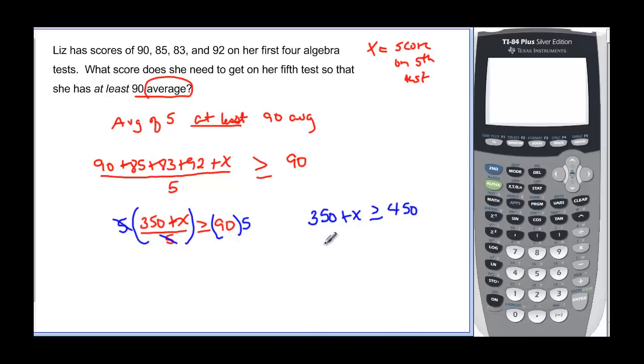And now we just solve the equation. So minus 350 on both sides. And that will tell us that x has to be greater than or equal to 100 when we subtract. So she needs to get a perfect score, and if there's extra credit, she needs a perfect score plus extra credit to get at least a 90 average.